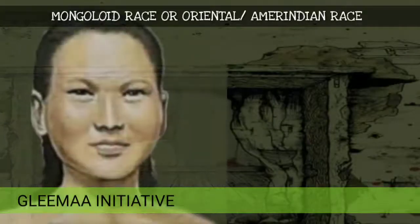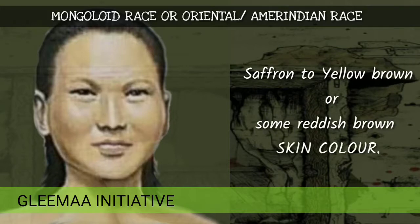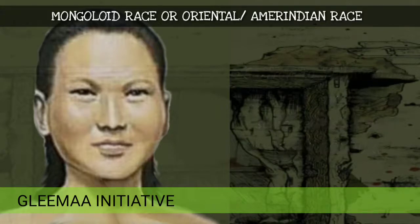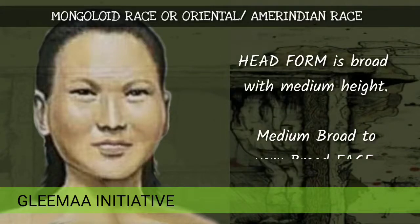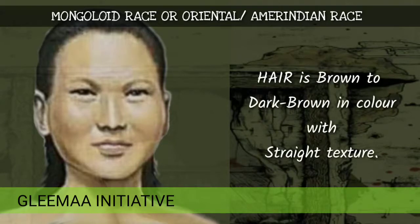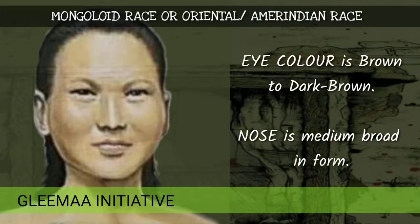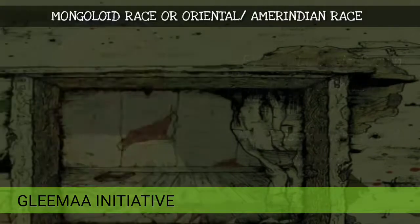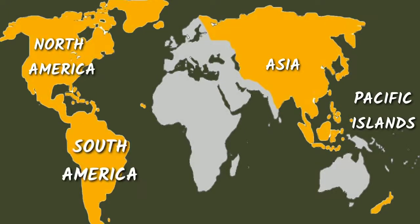Mongoloid race or Oriental or Amerindian race: saffron to yellow-brown or some reddish-brown skin color, medium tall to medium short in stature, head form is broad with medium height, medium broad to very broad face, hair is brown to dark brown in color with straight texture, eye color is brown to dark brown, nose is medium broad in form. They are found in Asia, Pacific Islands, North and South Americas.